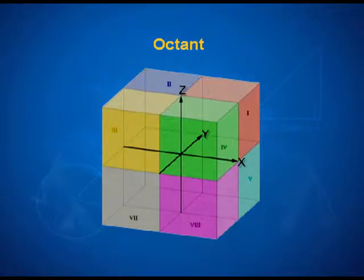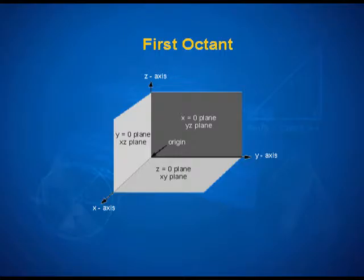If you are struggling with visualizing the first octant, think of the room where you are sitting and look at the bottom corner. The three axes x, y, and z run along the three edges, where z is along the height of the room. The wall in front of you is the y-z plane, the wall on your left is the x-z plane, and the floor is always the x-y plane — that is the orientation of our first octant.